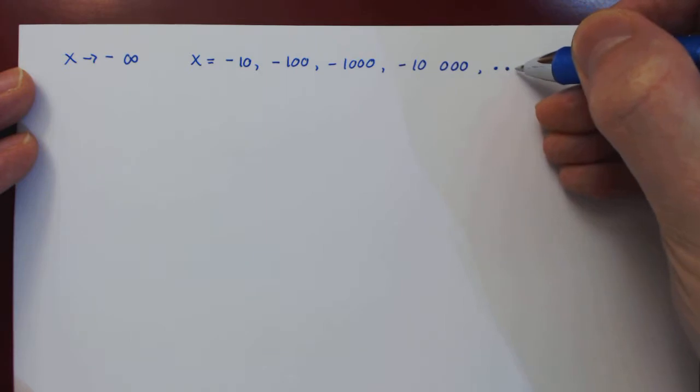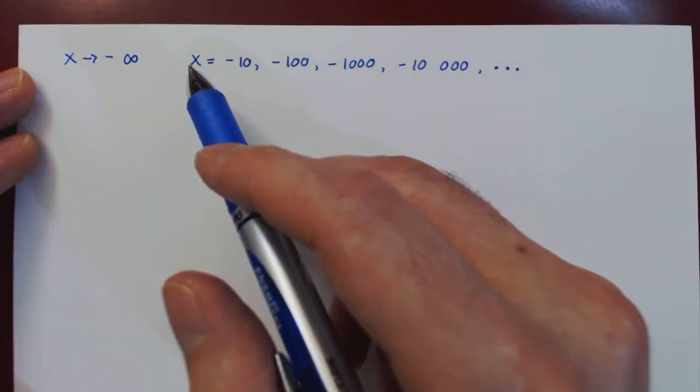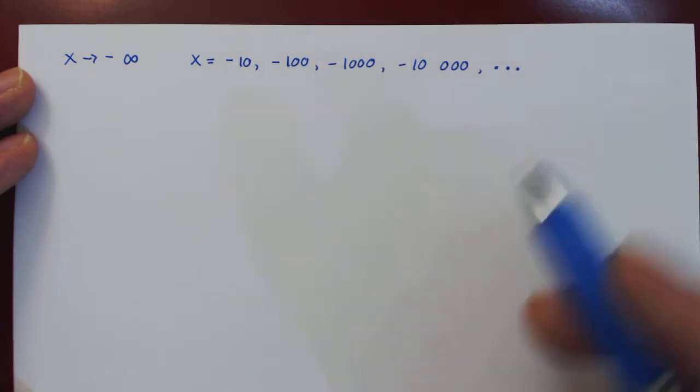So x is getting more and more negative, and there is no bound to how large a negative x can be.